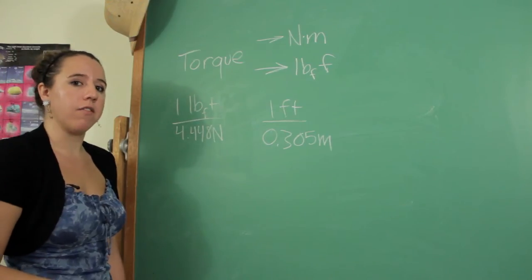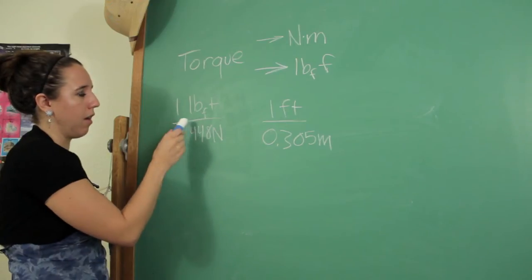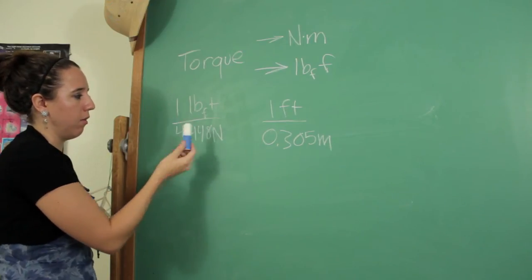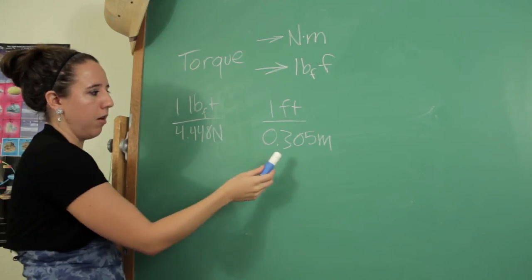Start by finding your conversion factors. They're standard values that are really easy to look up. So you basically have one pound equals 4.448 newtons. One foot equals about a third of a meter, 0.305.